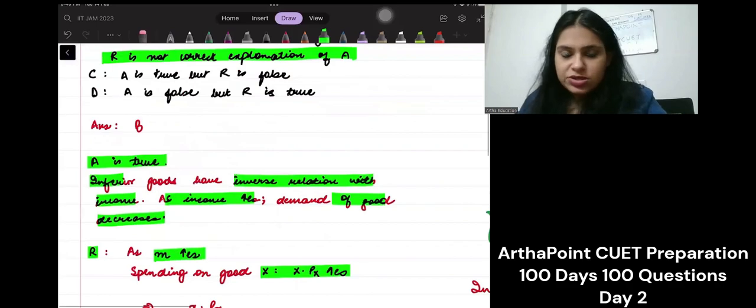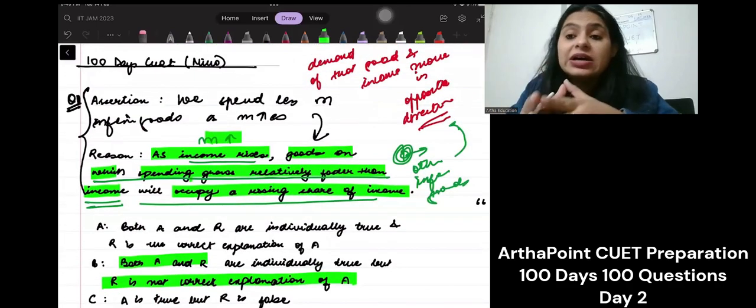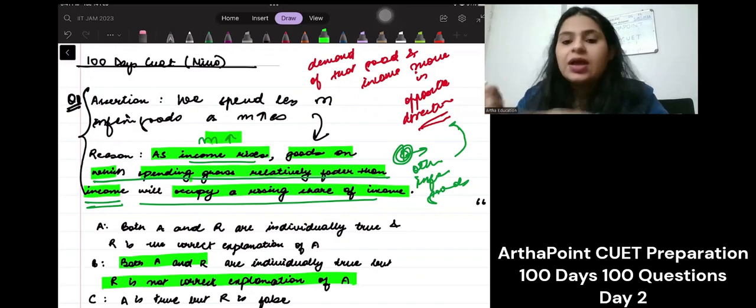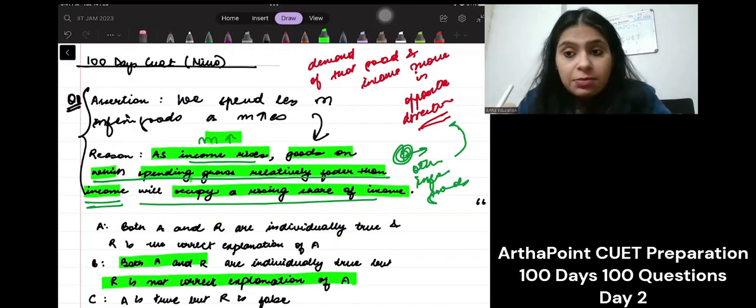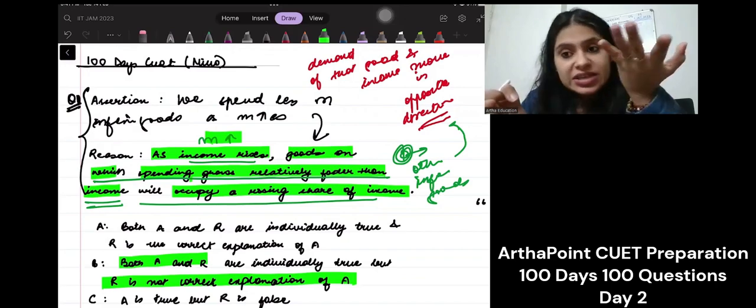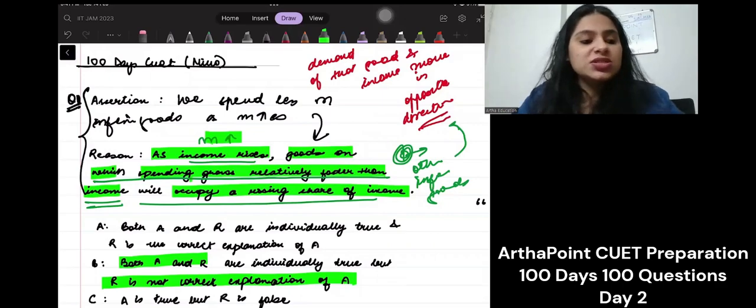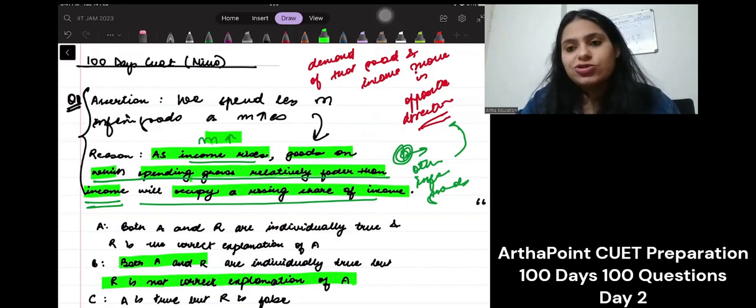What am I learning today? If there are N goods, not all of them can be inferior - only N minus 1 can be inferior. Inferior goods have negative income elasticity. The share of my income on normal goods will increase and on inferior goods it will decrease. This is your question on assertion and reason from microeconomics. We will meet tomorrow with another question. Thank you.